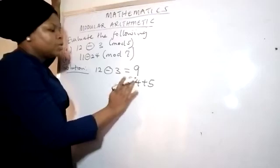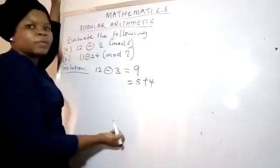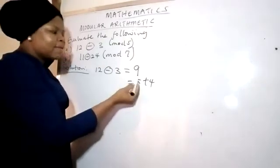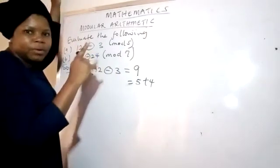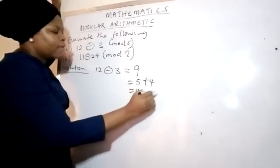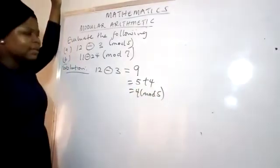Or you say 5 plus 4. This 4 is what? Your remainder. Or you say, how many times can 5 go in 9? One, remainder 4. So that means your answer is 4 in mod 5.